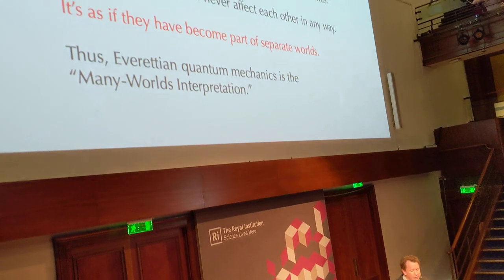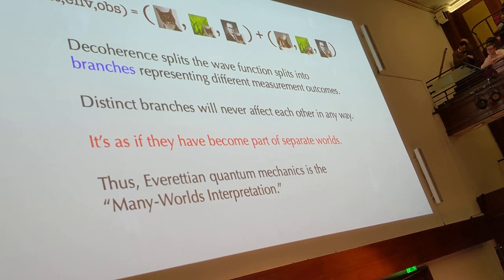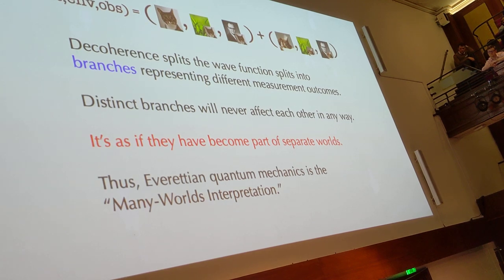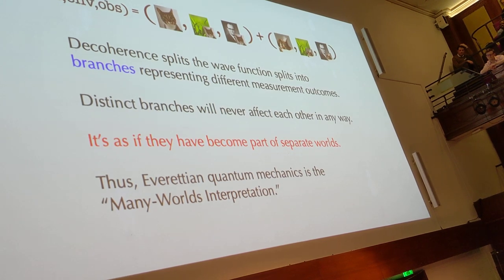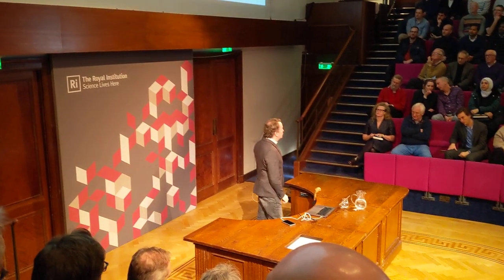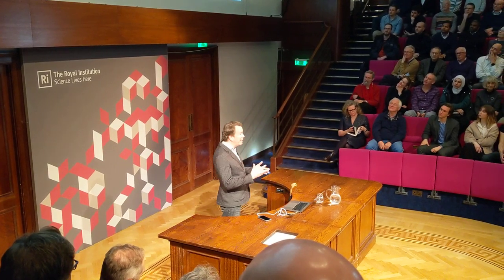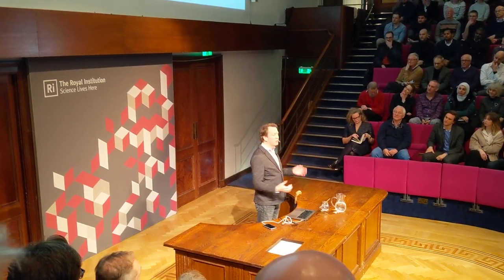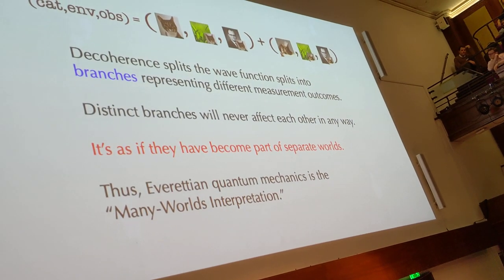In other words, decoherence — the entanglement of the cat with the environment — has branched the wave function into two different pieces which evolve independently from then on for the rest of the history of the universe. They do not affect each other. They do not care that each other exists. It is as if they have become two separate worlds. That's why this interpretation was later dubbed the many worlds interpretation of quantum mechanics. It predicts that every time I measure a quantum system by entangling it with the wider world, two copies — or many more copies — of the world are created, each of which a different measurement outcome was obtained.